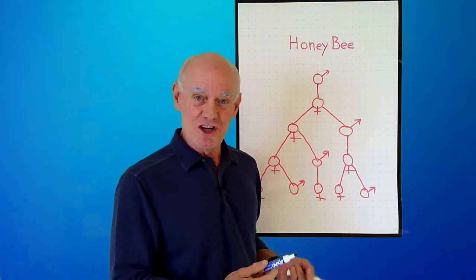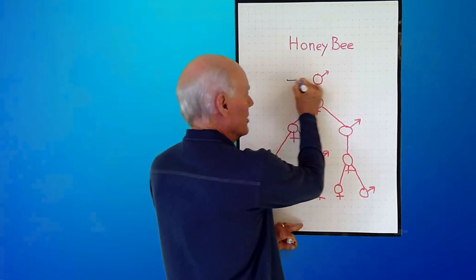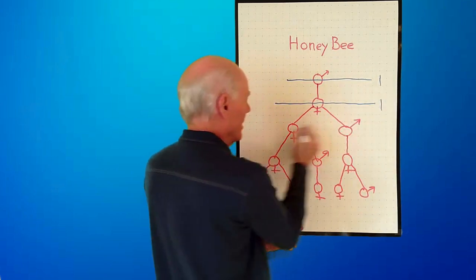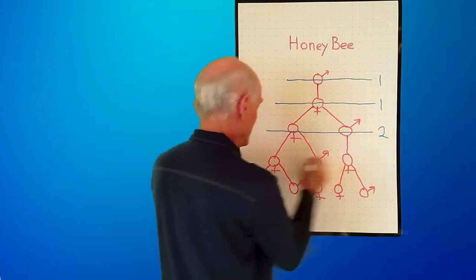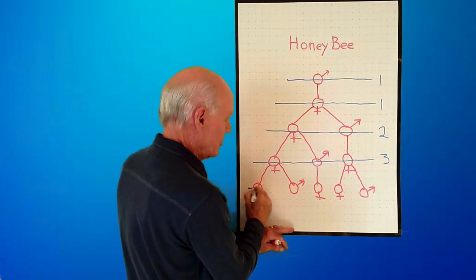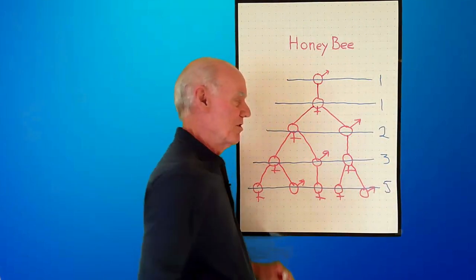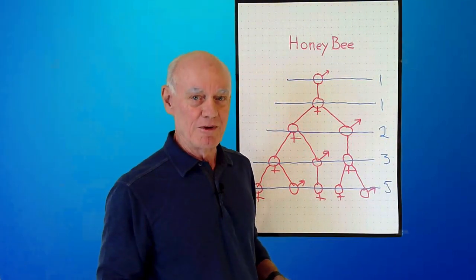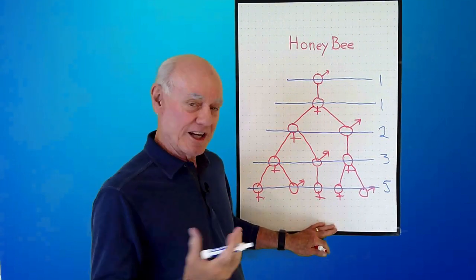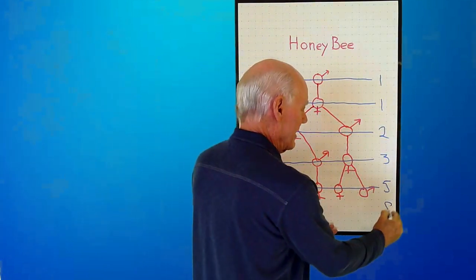Let's count the number of bees in each generation of the family tree of this male honeybee. In the first generation, we have one bee. Second generation, one bee. Third generation, two bees. This generation, three bees. This generation, five bees. You can see that the number of bees in the family tree of a male honeybee follows the Fibonacci sequence exactly. So, using my inductive reasoning, I can predict that the next generation in this family tree will have eight bees.